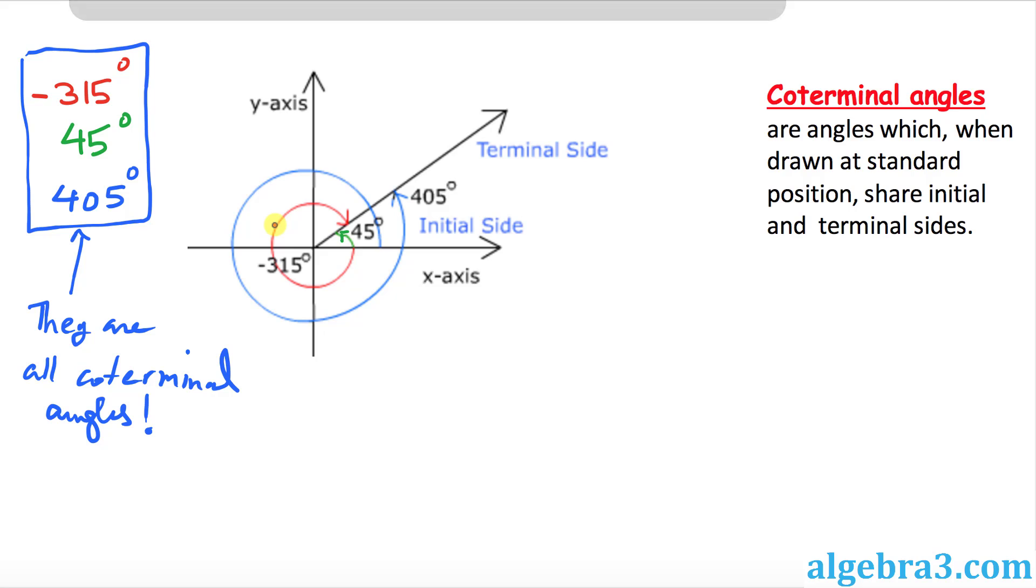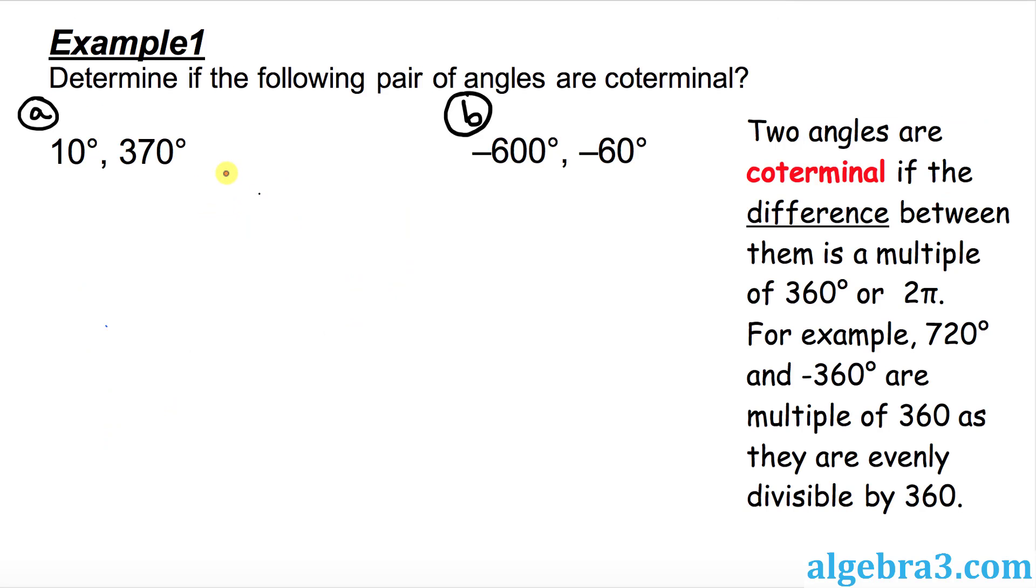Let's look at one more example to make sure that you get this idea. This time I have given example of three angles: negative 315, 45, and 405 degrees. Once again their initial side is x-axis and they end up with the same terminal side. That means they have the same terminal side or sharing the same terminal side. No wonder these three angles will be called coterminal angles. Now we will be doing a few examples to make sure that we do some problems.